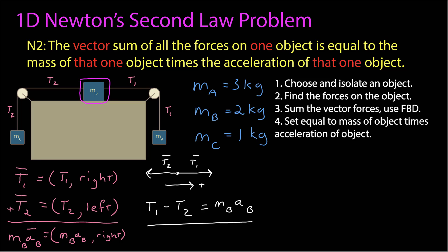I set these equal to the mass of b times the acceleration of b. The acceleration is a vector, so its magnitude is mass b times the magnitude of acceleration b, and I think it's pointing to the right. Mass b is being pulled by two wires each attached to a different hanging mass via pulleys. Since mass a is larger, I expect mass a to fall, mass b to move right, and mass c to rise. If I'm wrong, I'll get a negative acceleration at the end. So the difference of the two tension magnitudes equals mass b times acceleration b.